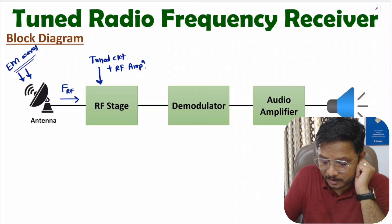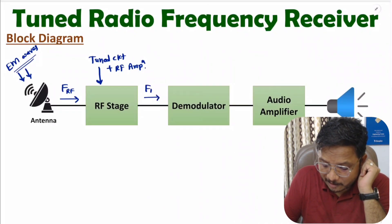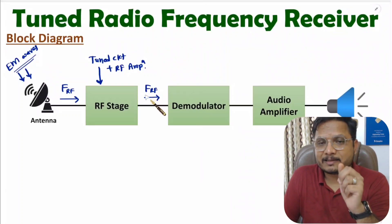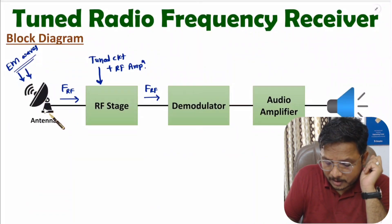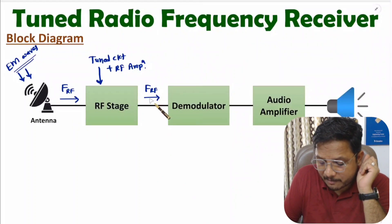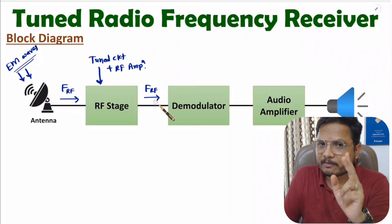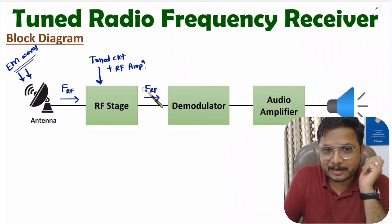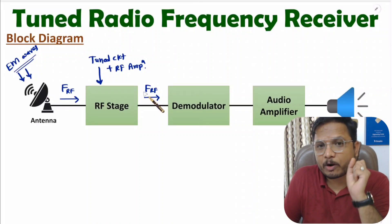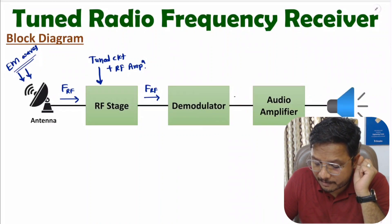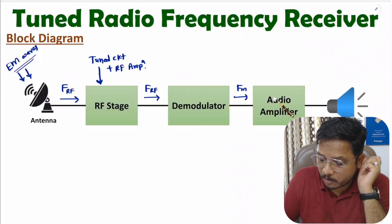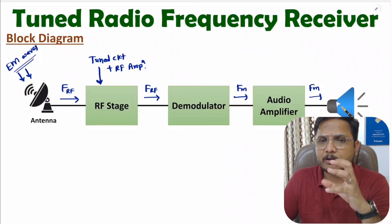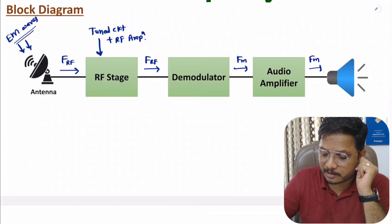Here we receive all channels using electromagnetic waves. After tuning, we will have only one channel with RF frequency. This channel is modulated, so to extract the message signal we need to do demodulation. After demodulation we will have the message frequency, and since that message signal is weak, it goes through an audio amplifier to the loudspeaker.